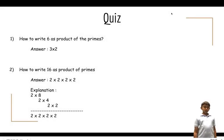For question 1, the answer is 3 × 2. For question 2, the answer is 2 × 2 × 2 × 2. The explanation is like this: 16 equals 2 × 8, and then you divide it into 2 × 4, and then you divide 4 into 2 × 2.